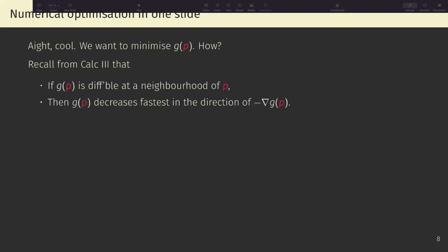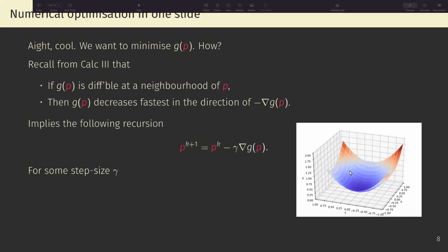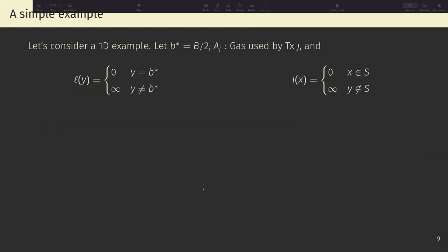So we want to minimize G of P. How can we do it? Well, if you recall from Calc 3 that if a function is differentiable at a neighborhood of a point, then that function decreases the fastest in the direction of negative its gradient. And this, in turn, implies the following recursion. If we want to minimize this function, then what we can do is we take some steps of size gamma in the direction of negative the gradient. So we move for one step in that direction. We achieve a new point, then we keep moving on that direction further and further. Now, this formula here, it's already kind of telling of something. Does this formula look familiar to something? Let's maybe make it a bit more, let's maybe exemplify it.